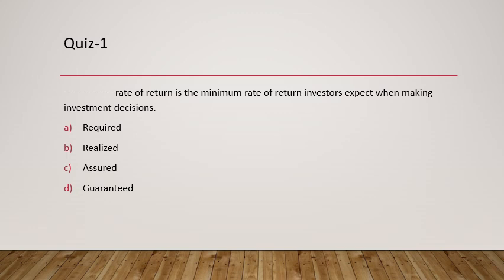Question 1: Blank rate of return is the minimum rate of return investors expect when making investment decisions. The minimum rate of return that investors expect is called the required rate of return. Realized return is something you get after you have invested for a specific time frame. Assured return and guaranteed return are different concepts. The minimum rate of return which investors expect is called the required rate of return.